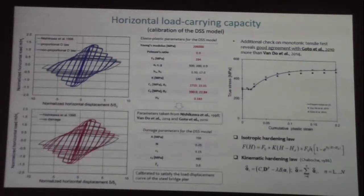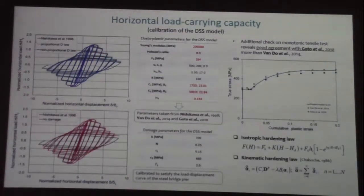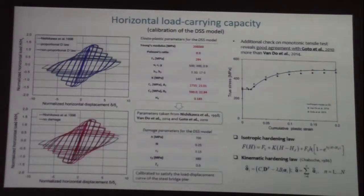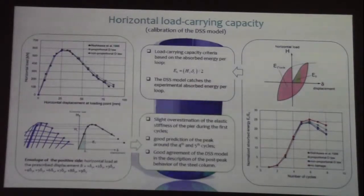We took the material elastoplastic parameters directly from the previous finite element analysis and only calibrated the damage parameters. Using a non-proportional damage law, we can get a better description of the material performance through the cycles. Using a proportional damage law instead, we have an overestimation of the size of the hysteresis loop as the analysis progresses. We then fit a monotonic tensile test from both the Gotoh and Van Gogh papers. By fitting all parameters to the worst-case scenario, we can verify that even for a simple monotonic tensile test we obtain a good approximation of the material behavior, and there is better agreement using the non-proportional damage law.